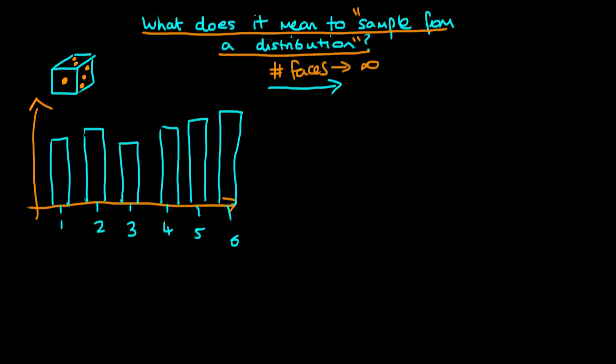On each of those faces of the die we can imagine a number between zero and one such that all the numbers between zero and one are represented. Then we would get out a continuous distribution between zero and one.